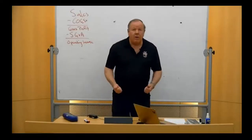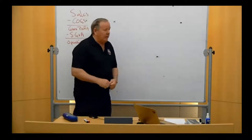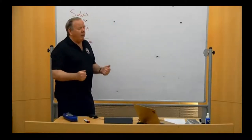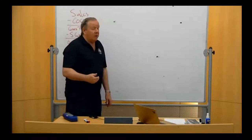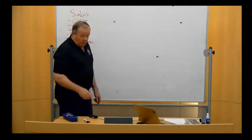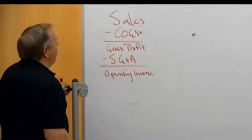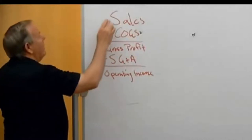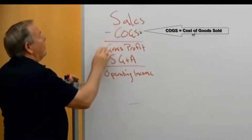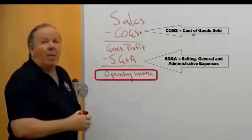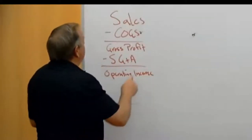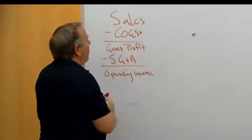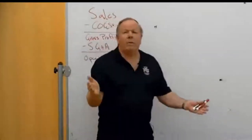This is a review of chapters 19, 20, and 21, and we're going to introduce cost volume profit analysis from chapter 22 in managerial accounting. We're focusing on this part of the income statement: sales minus cost of goods sold gives us gross profit, minus SG&A gives us operating income. To figure out what it cost us to make our stuff, we have to sort the period costs from the product costs.